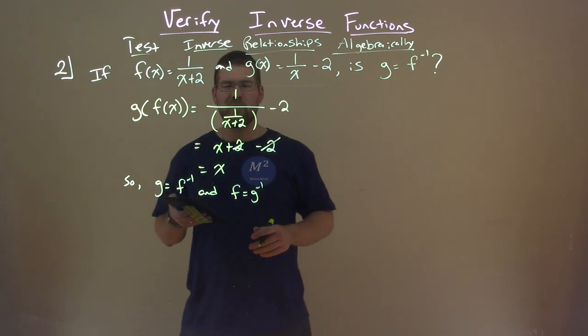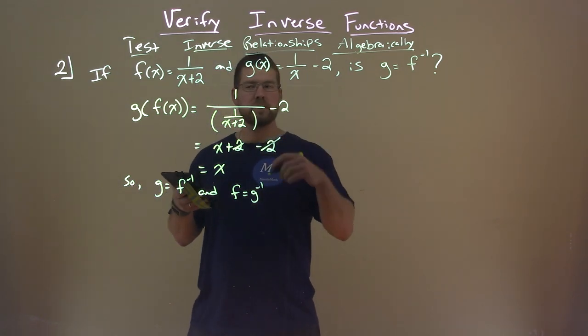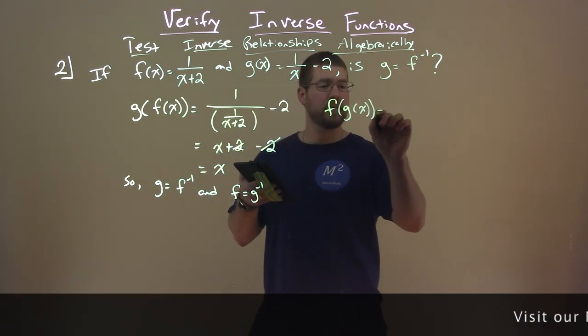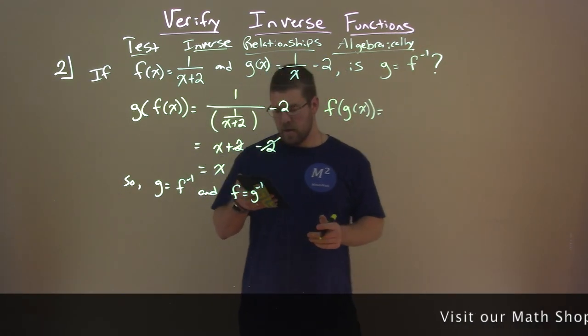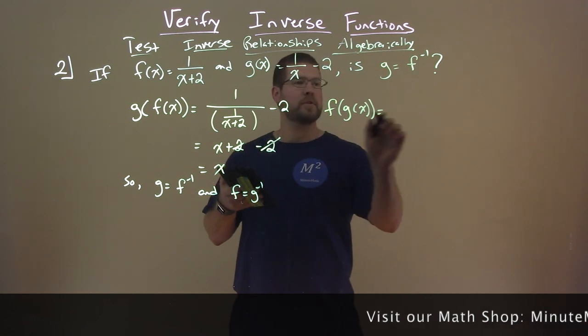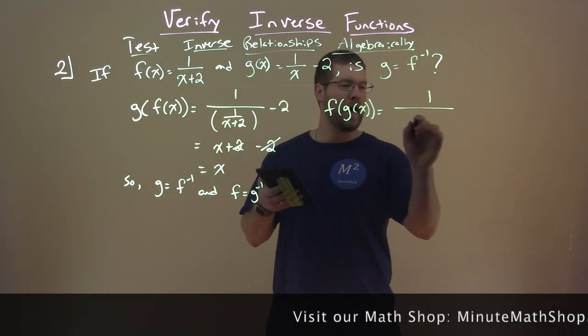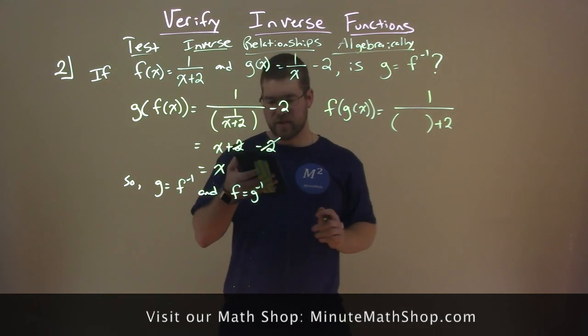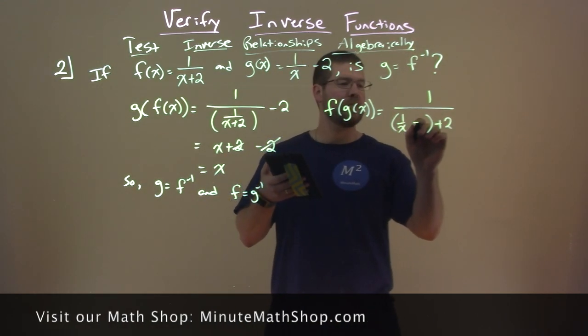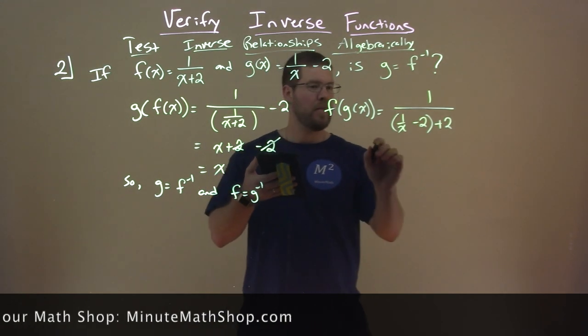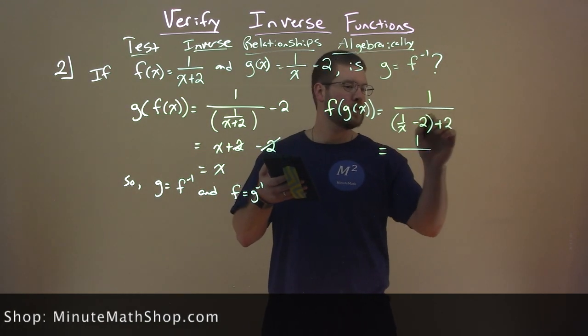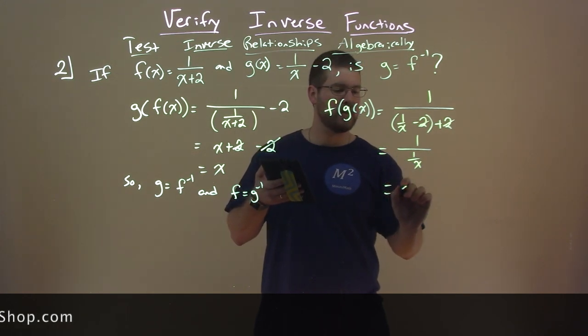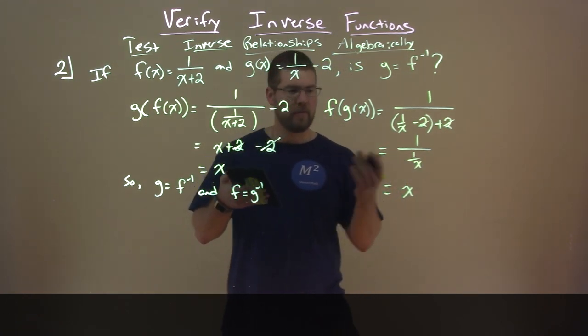Well, what if we want to verify the other formula? Let's do it the other way around: f of g of x, will it still equal x? Let's find out. So we take f of x, which is 1 over x plus 2, and we put g of x in there, which is 1 over x minus 2. That simplifies to 1 over, the 2's cancel, 1 over 1 over x, which is just x.